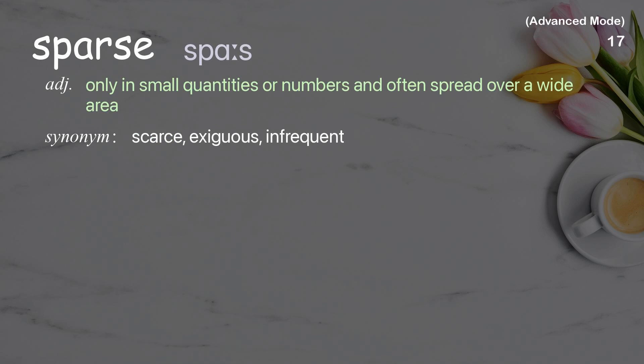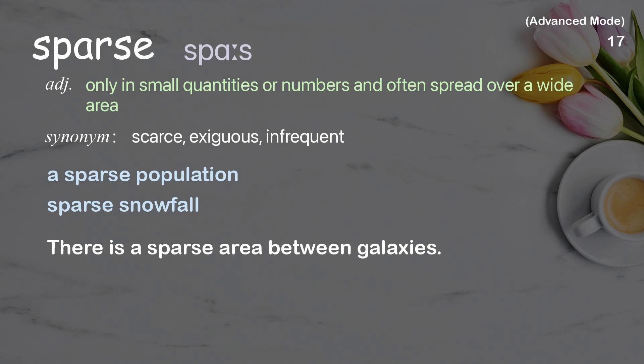Sparse: only in small quantities or numbers, and often spread over a wide area. Examples: a sparse population; sparse snowfall. There is a sparse area between galaxies.